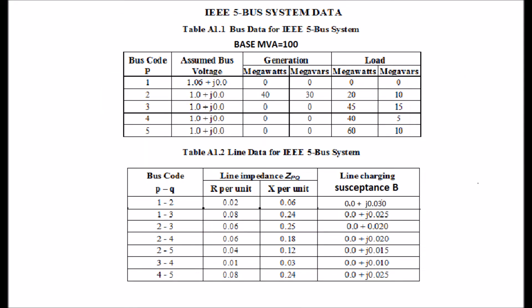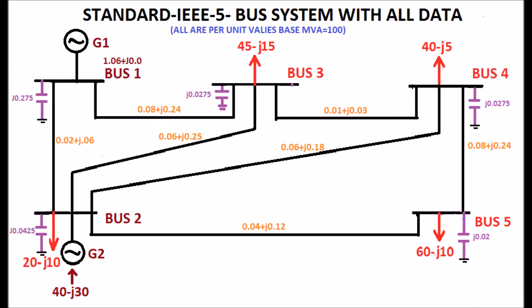Standard IEEE 5 bus system is considered. Table A1.1 is the bus data. Table A1.2 provides line data. All are based on 100 MVA. The system is displayed with all data.